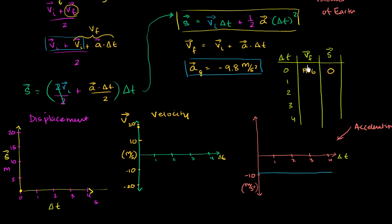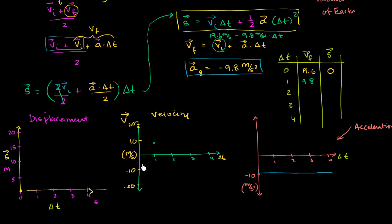After one second: velocity is 19.6 plus negative 9.8 times 1, giving 19.6 minus 9.8 equals 9.8 meters per second. The units work because multiplying meters per second squared by seconds gives meters per second. So after one second, our velocity is now half of what it was — 9.8 meters per second.